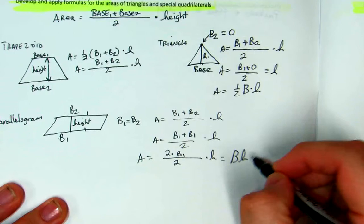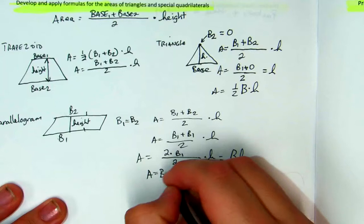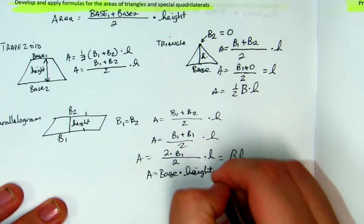And you get base times the height, which is what the area formula essentially is, is your base times the height. But it still comes from the area of your trapezoid.